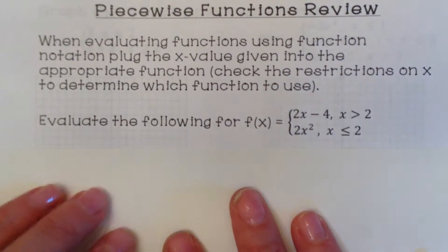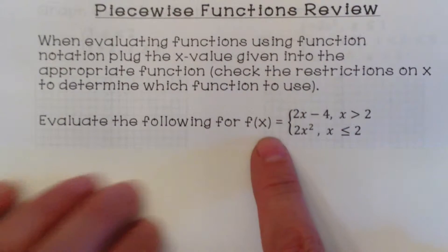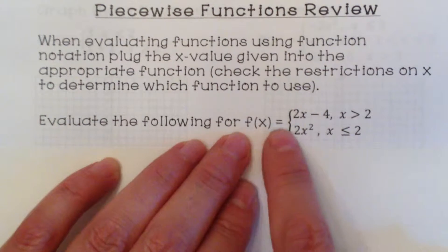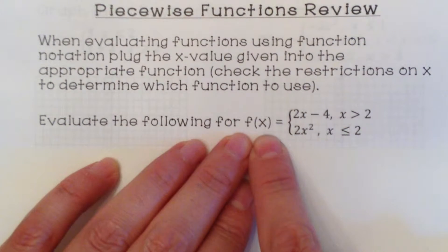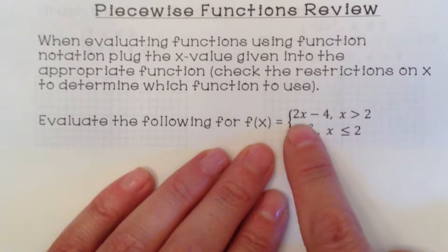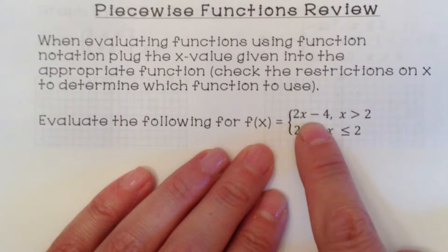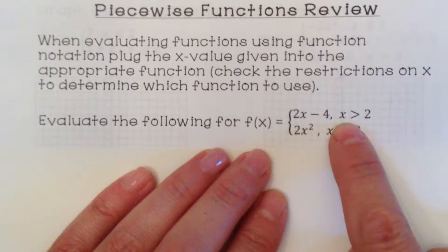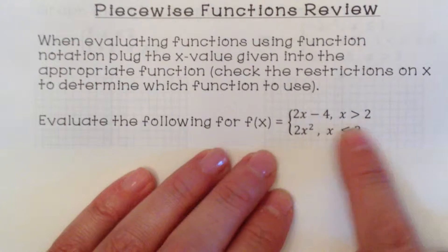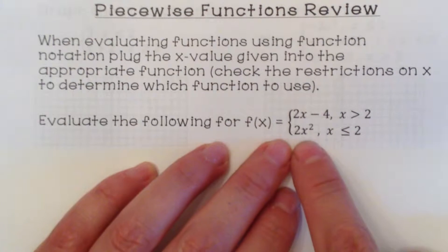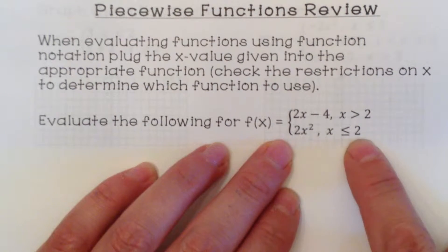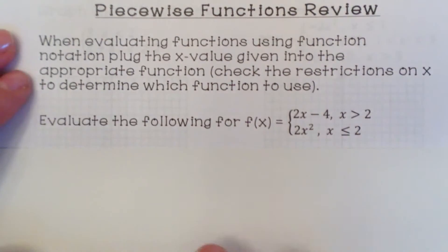We're going to evaluate the following for f of x. This is function notation: f of x equals 2x minus 4 strictly for x values that are greater than 2, and it equals 2x squared strictly for x values that are less than or equal to 2.